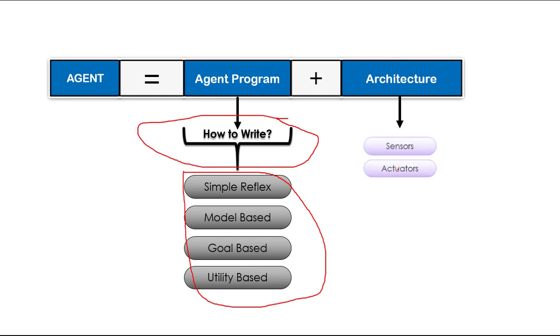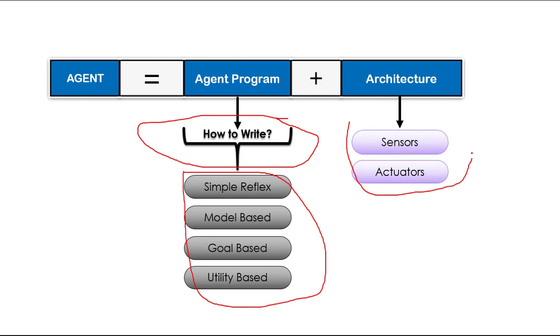Generally, agent architecture has two components: sensors and actuators. As an AI scientist, we need to focus upon the agent program.